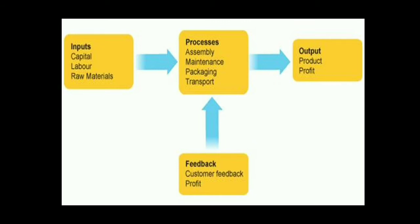Lastly, we have the output — that is the final finished product and the income obtained after selling those products. Once things are processed in the industry, they are sent to the market by trucks, sold off, and the profit you get from those sales is the output in the industrial system. These three factors — input, processes, and output — are very important in an industry.